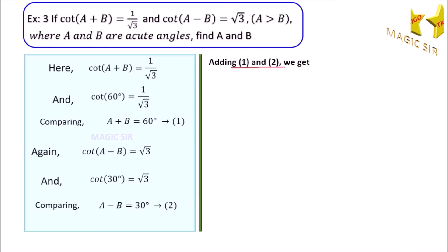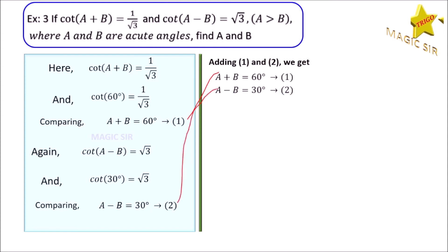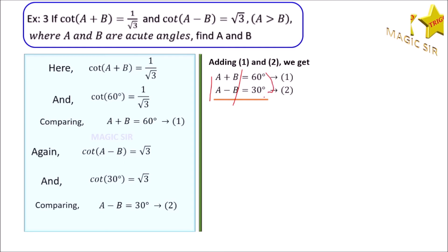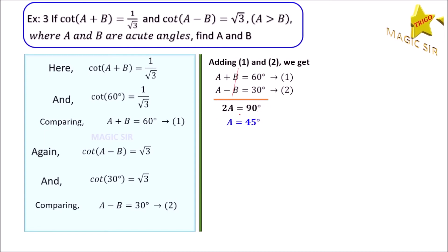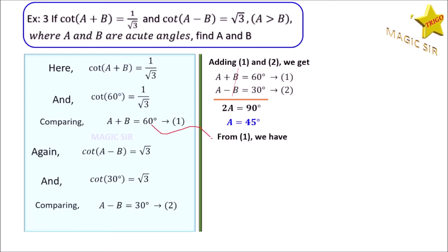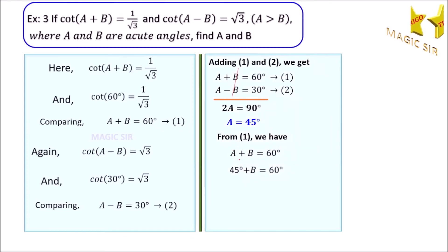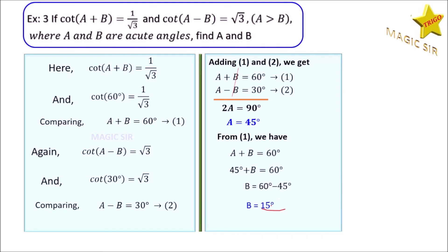Comparing, we get cot(A−B) equals cot 30 degrees, therefore A minus B is equal to 30 degrees. This is our second equation. To find A and B, we solve equations 1 and 2. Adding them: A plus B equals 60 degrees and A minus B equals 30 degrees. So 2A equals 90 degrees, therefore A is equal to 45 degrees. From the first equation, 45 degrees plus B equals 60 degrees, therefore B is equal to 15 degrees. Hence angle A equals 45 degrees and angle B equals 15 degrees.